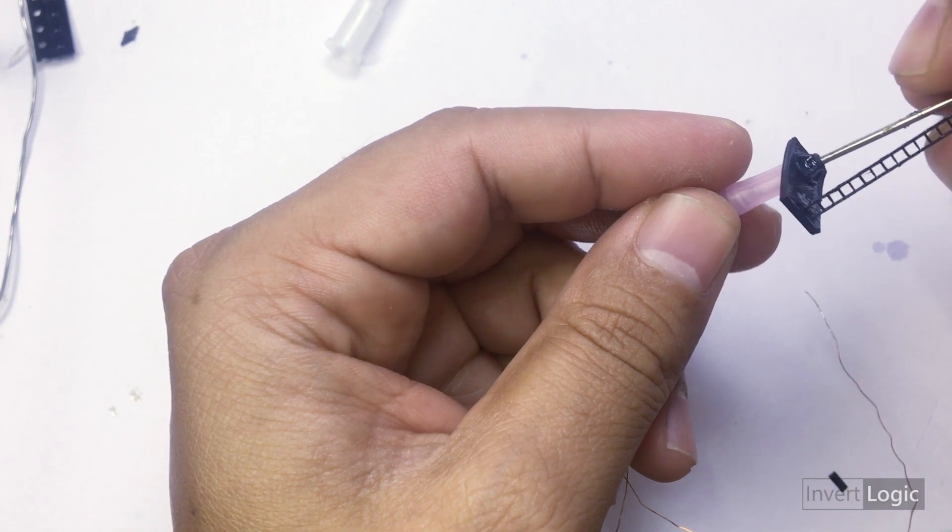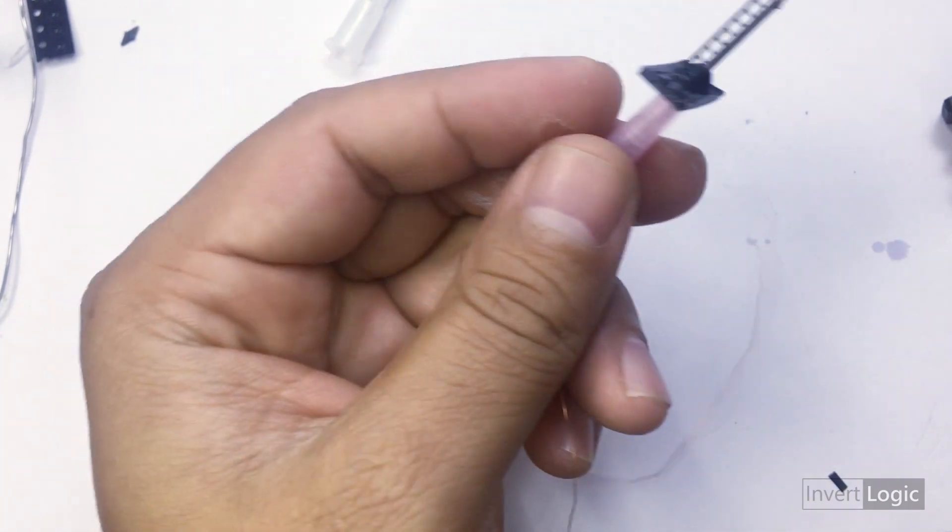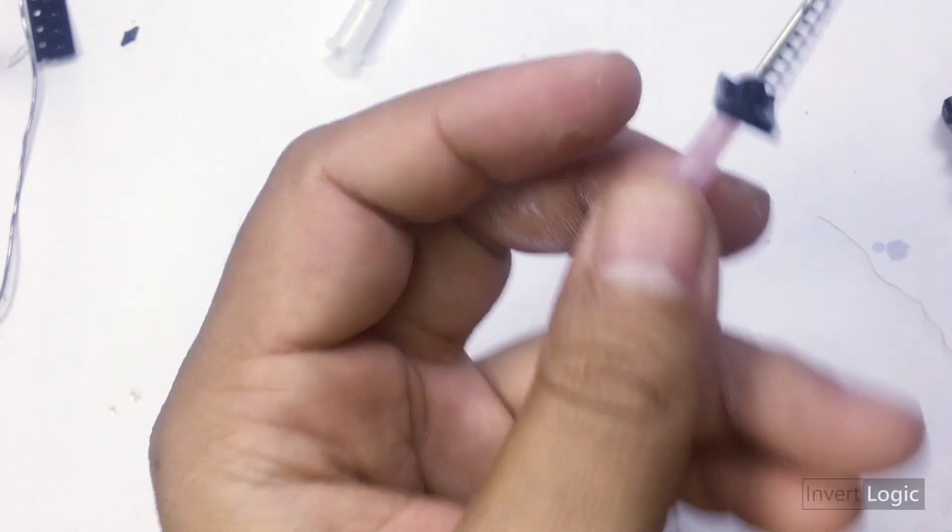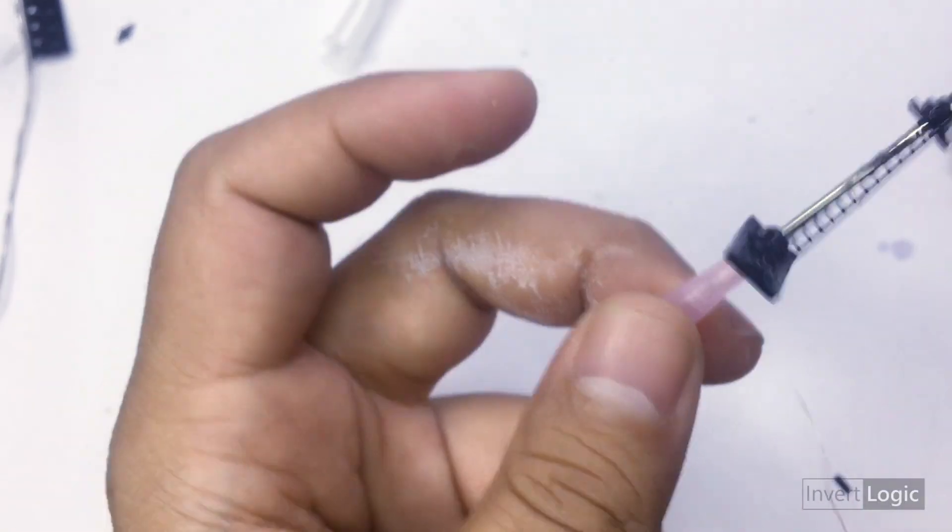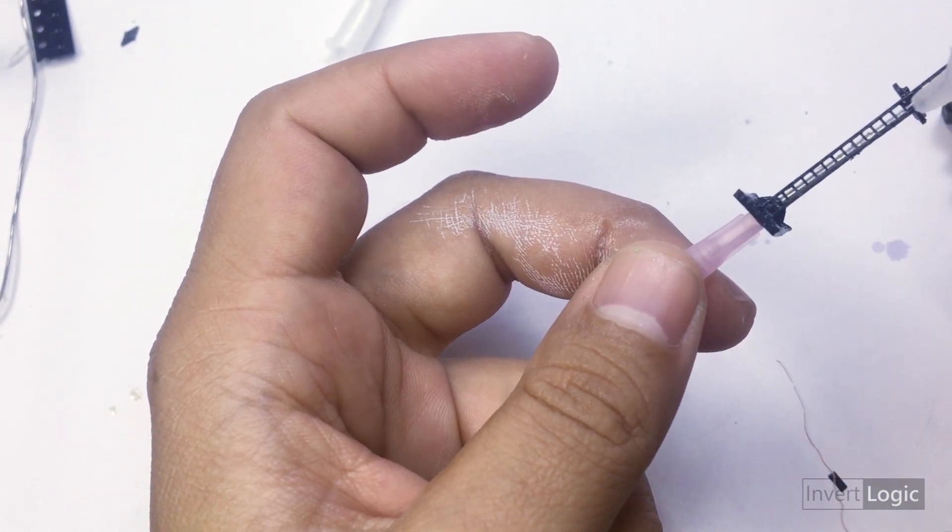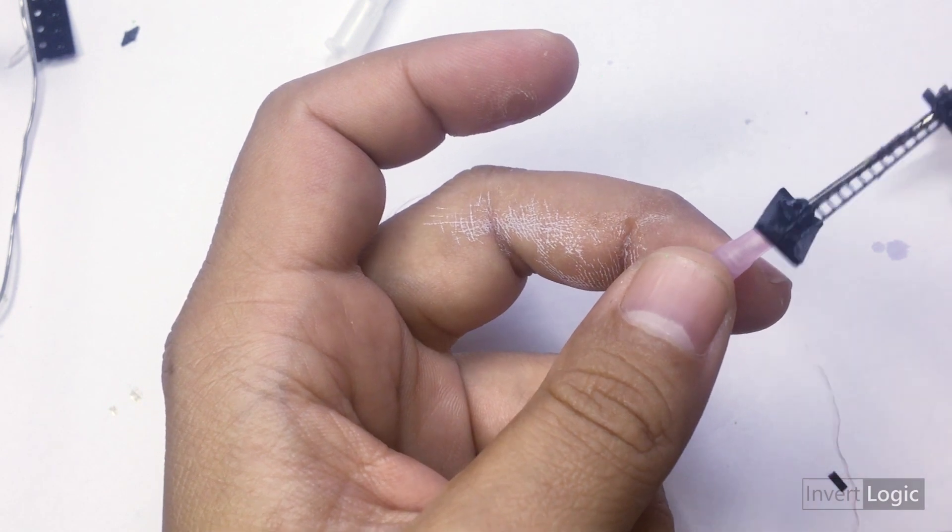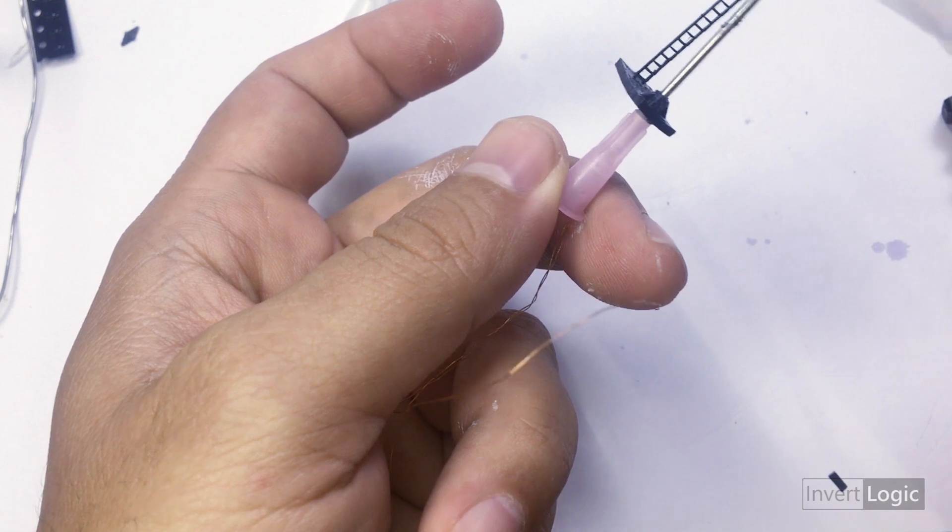When I did this, a little bit of superglue stuck on my finger. As you can see, it looks like white color on my finger. That's the superglue which basically came from within the injection because I put excess glue there. So don't do that.